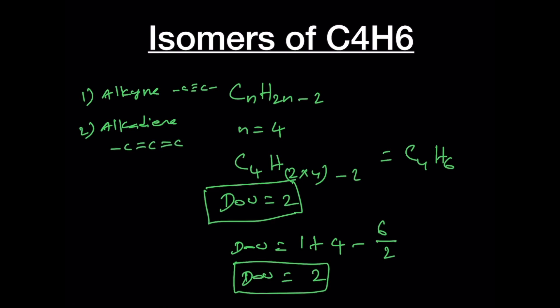Therefore we can have an alkyne (carbon-carbon triple bond), or an alka-diene (two carbon-carbon double bonds), or we can also have a ring plus a double bond, or we can have two rings. All these possibilities we need to explore one by one.